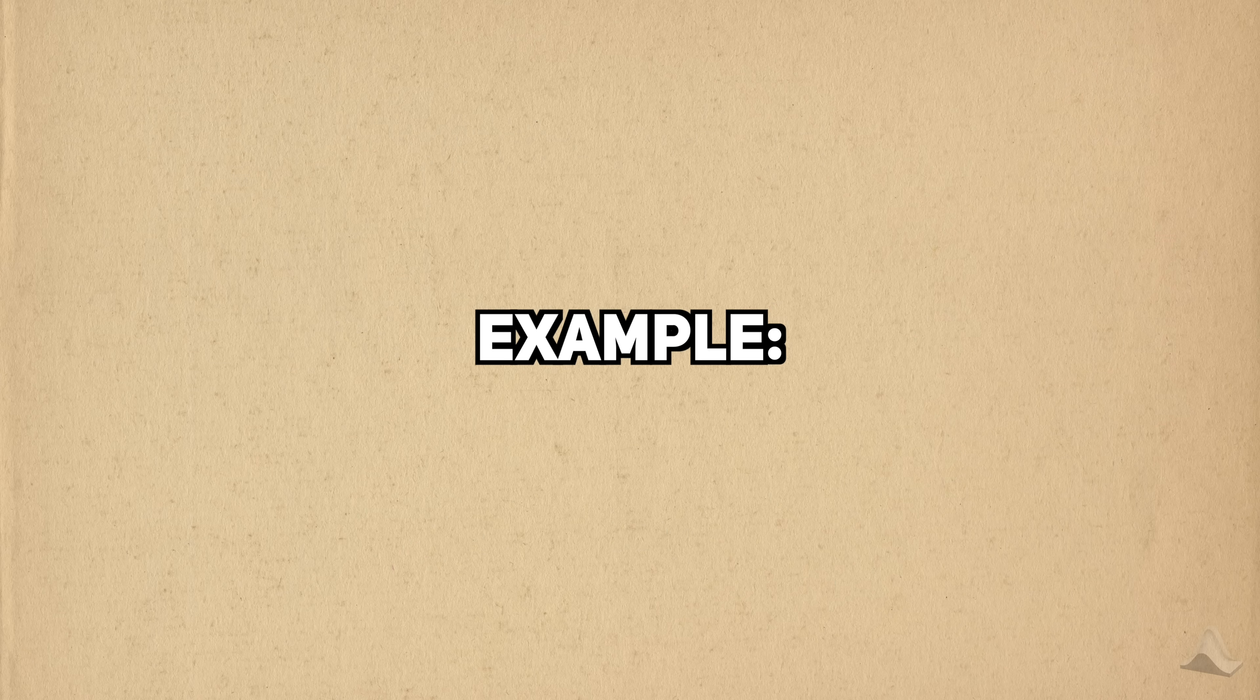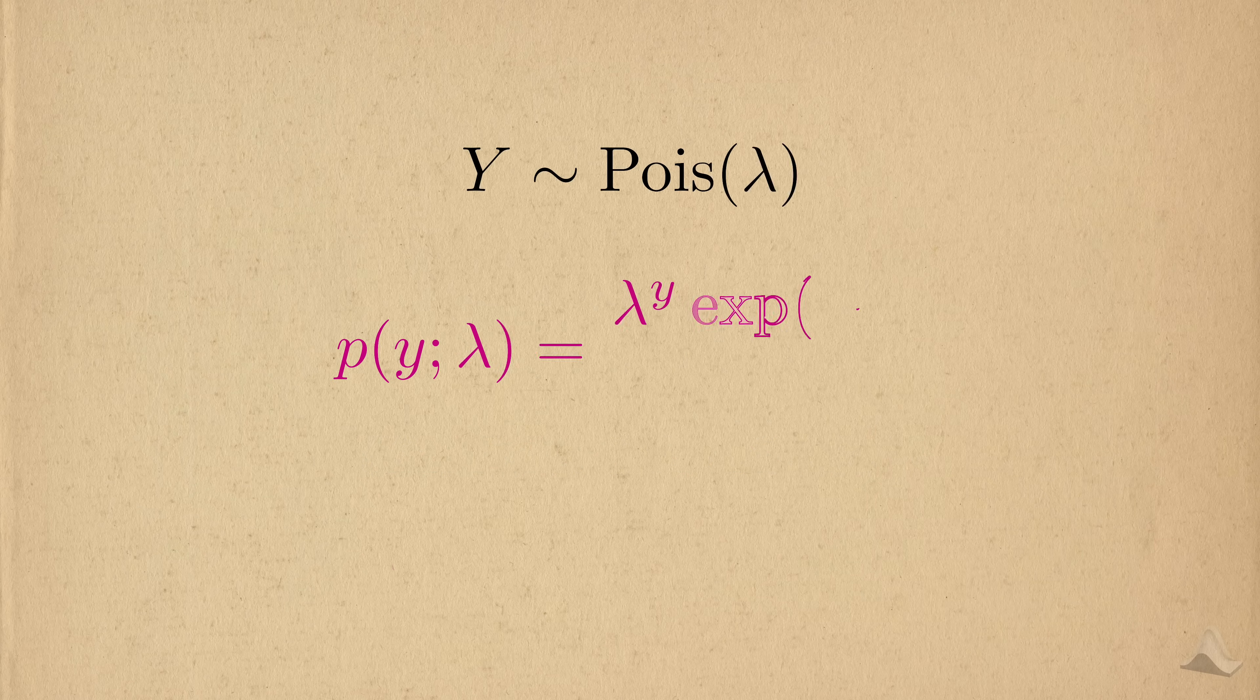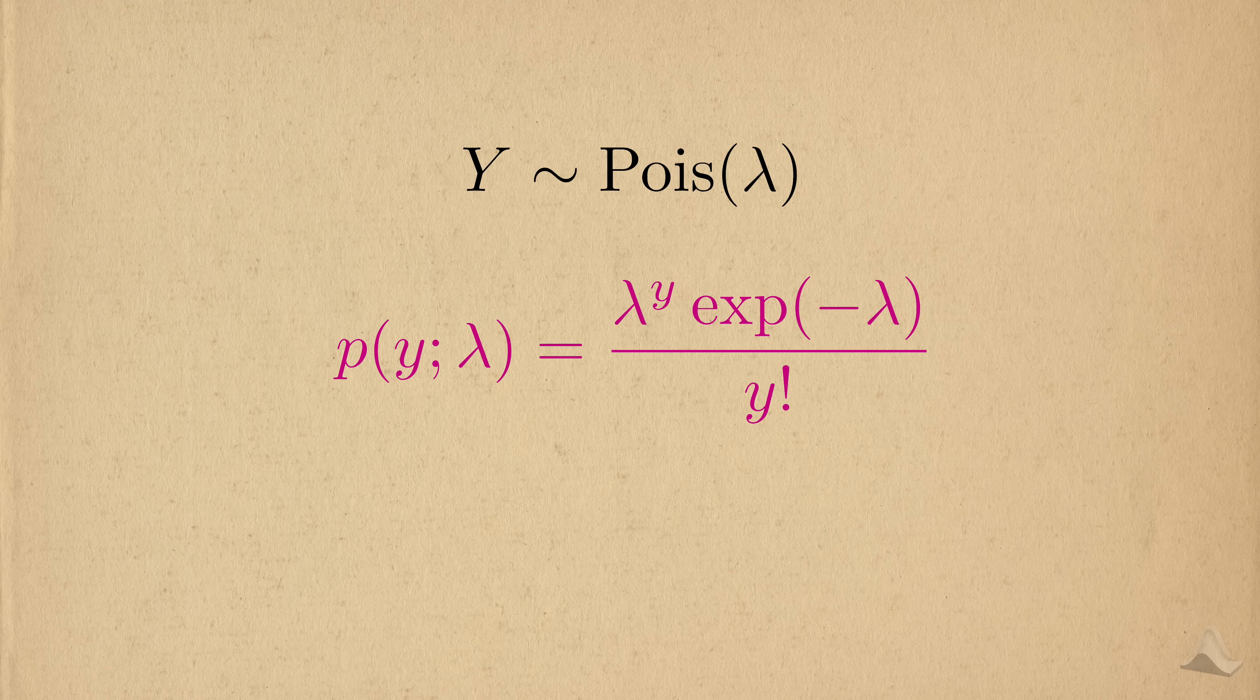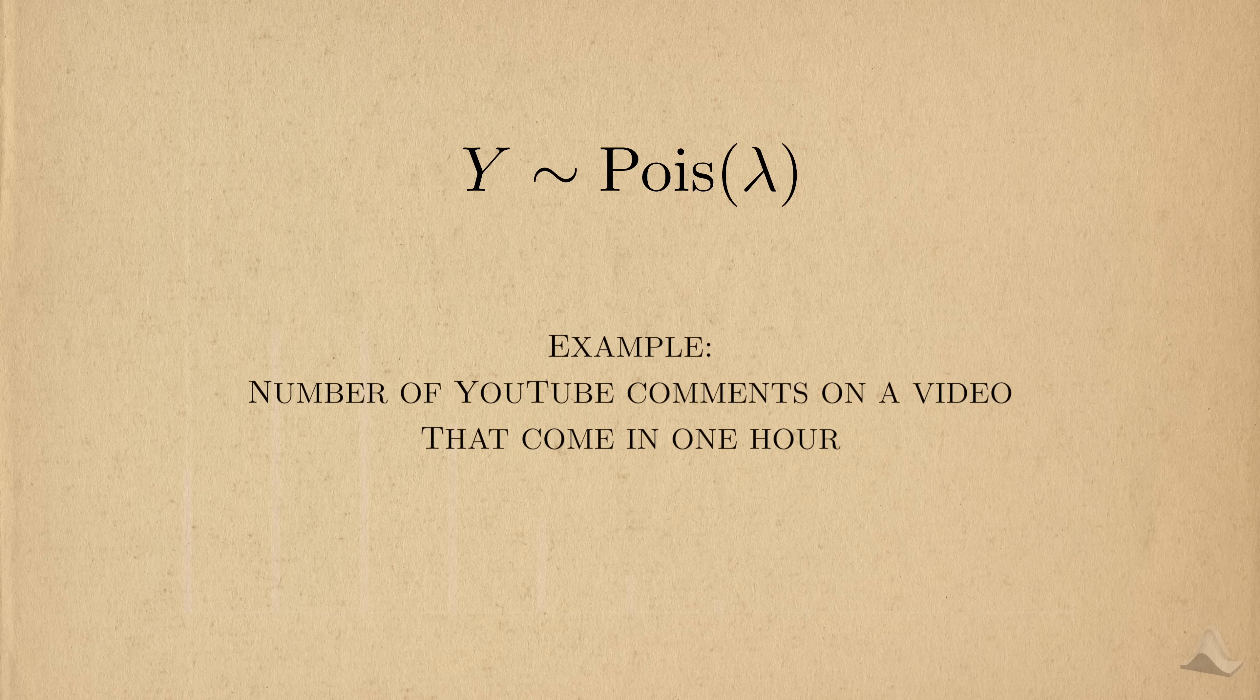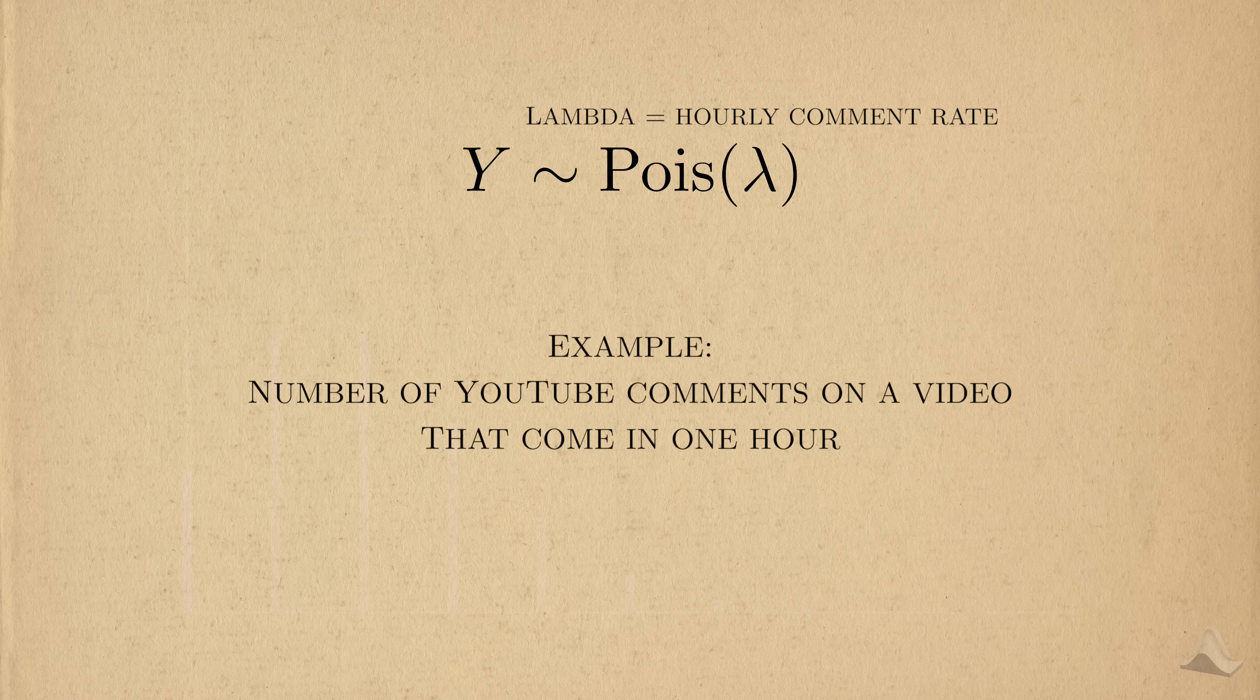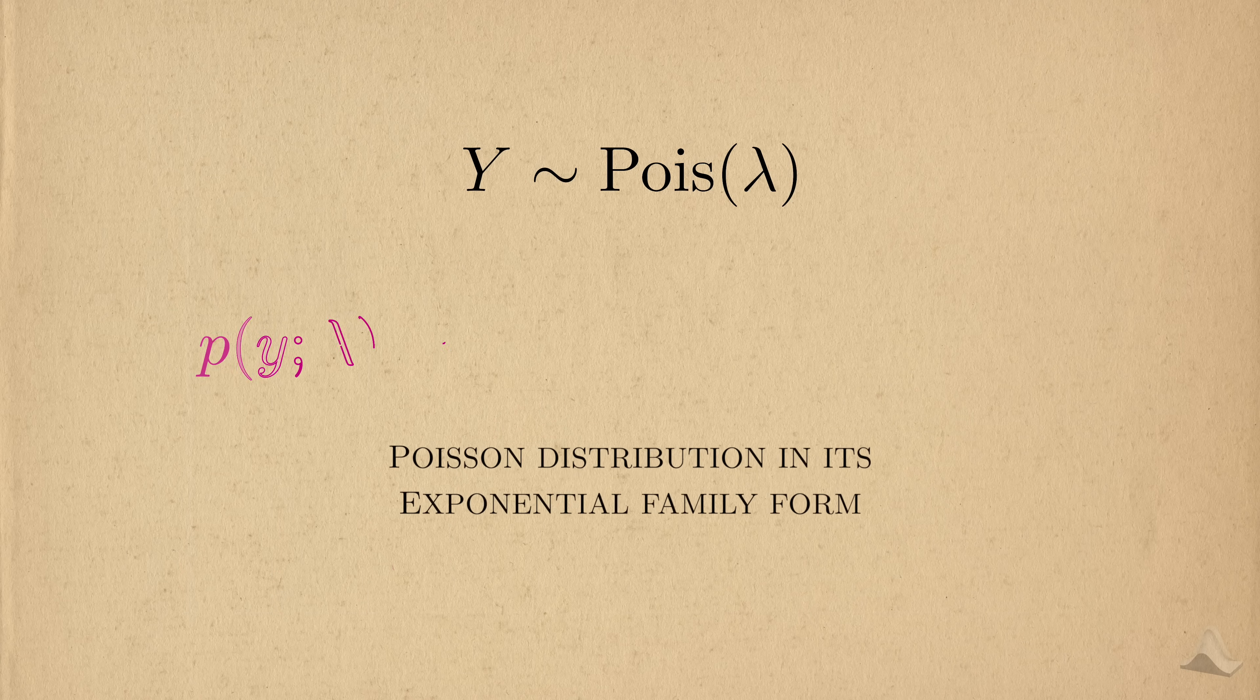For a second GLM example, let's see how they can be used for count outcomes. This particular model is also known as Poisson regression. The Poisson distribution is typically written in the following form. The parameter of the Poisson distribution is usually denoted as lambda, and you can think of it as representing a rate. Let's say that the outcome Y is the number of comments I get on a YouTube video. If I choose to look at the number of comments that come in a single hour, then lambda can be interpreted as the number of comments per hour.